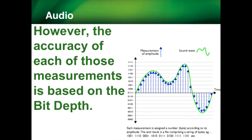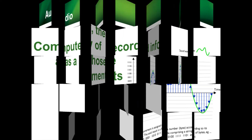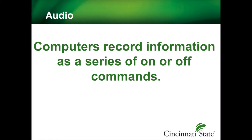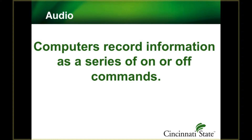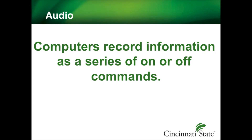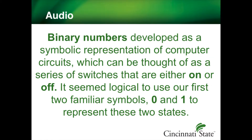As promised from the last lecture, we're going to have a more in-depth discussion on what bit depth is all about. Remember from before, it's about accuracy — how good are your measurements, and why is it difficult to get accuracy in a computer? To understand this, you have to have a basic understanding of how computers work. Computers record information as a series of on or off commands — yes or no — essentially, because a computer is only capable of turning something on or off, like a light switch. It's how it turns things on and off extremely rapidly that allows computers to communicate and transfer information. Binary numbers were developed as a symbolic representation of computer circuits.